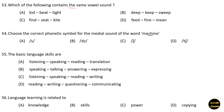Next question: Which of the following contains the same vowel sound? Option A: kid, beat, tight — option B: deep, keep, sweep — option C: find, seat, kite — option D: feed, fine, mean. Option B is the correct answer. Next question: Choose the correct phonetic symbol for the middle sound of the word 'machine.' Option C is the correct answer.